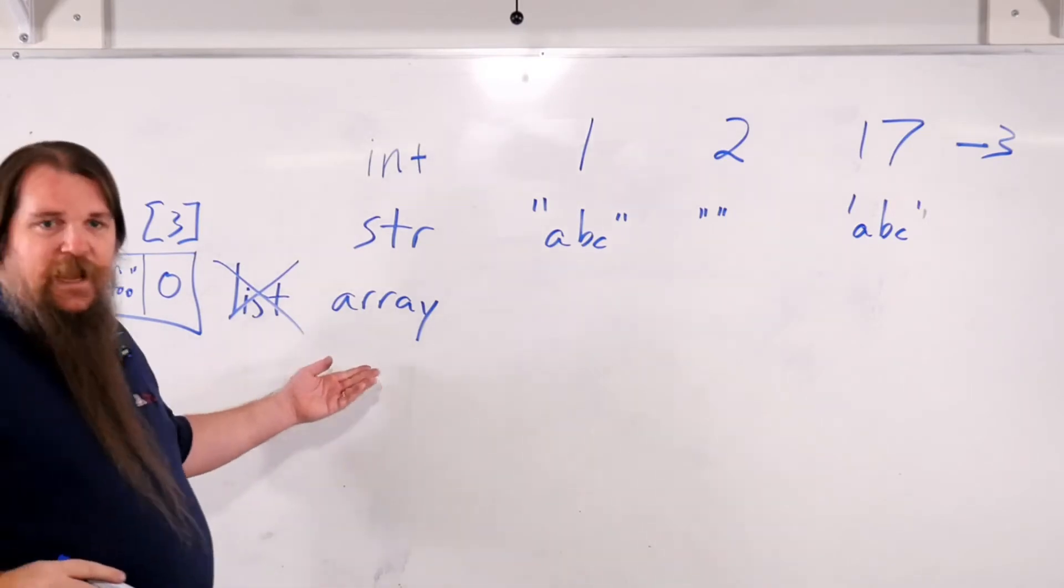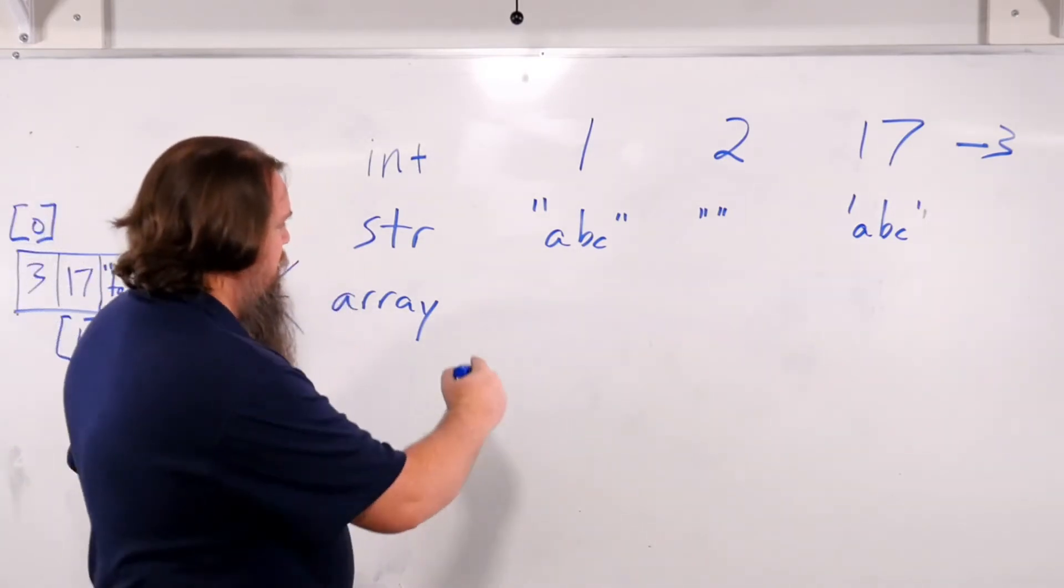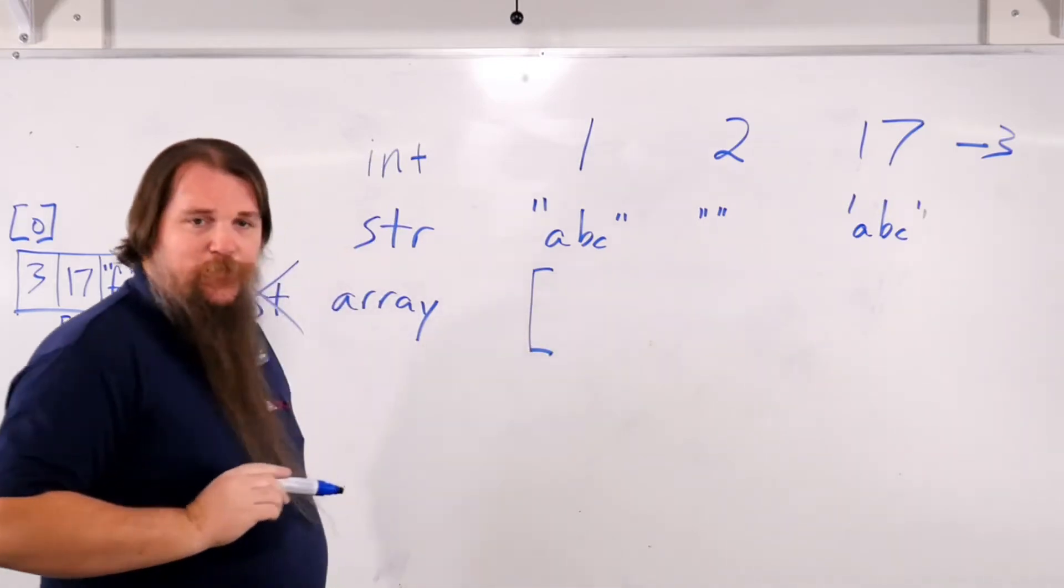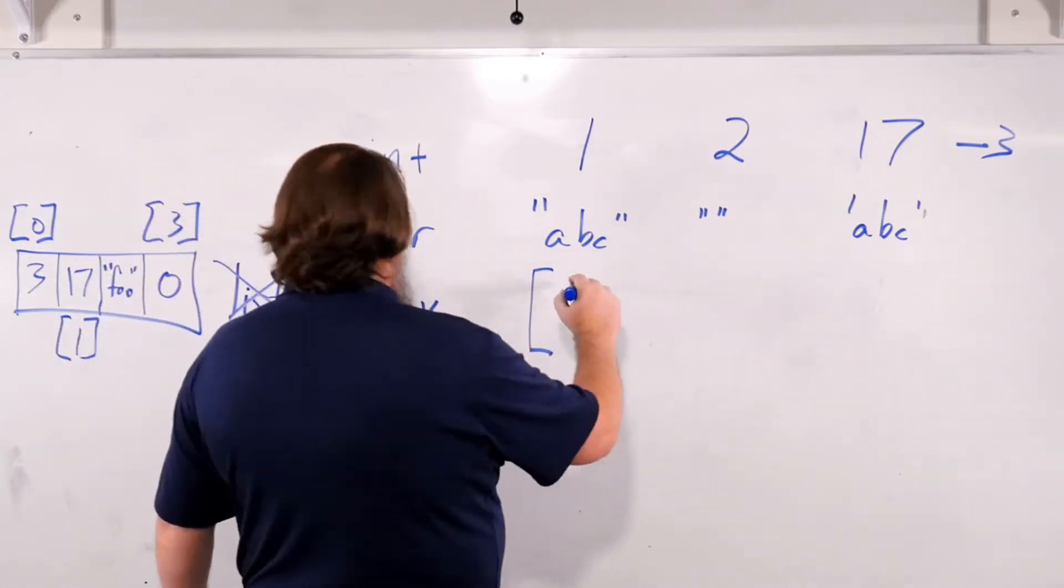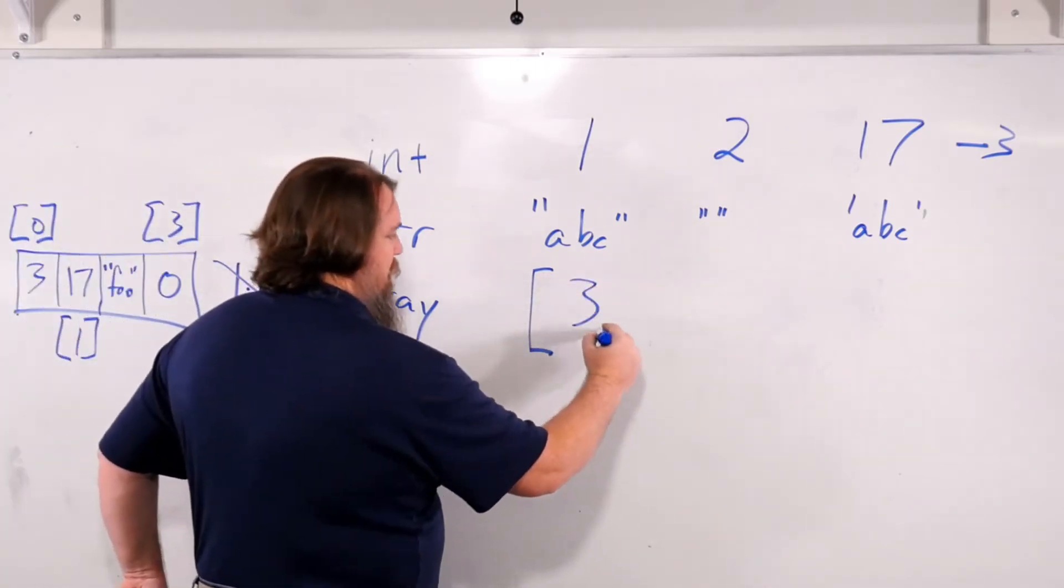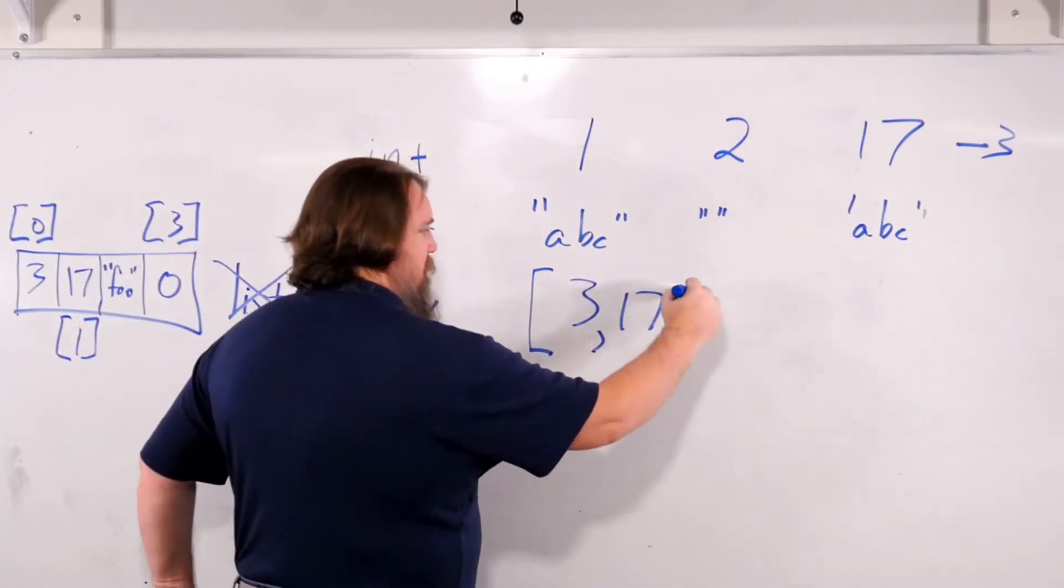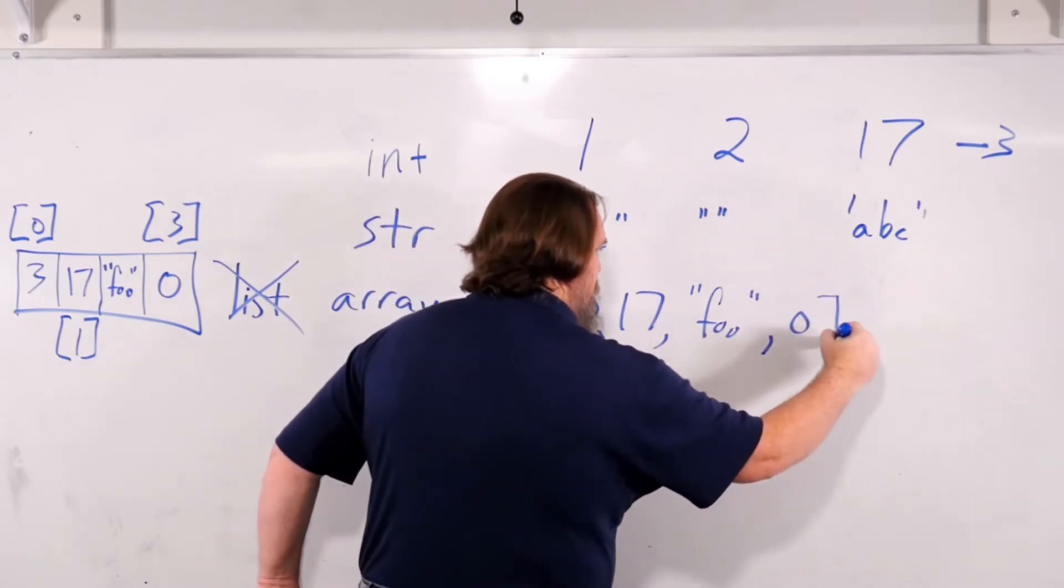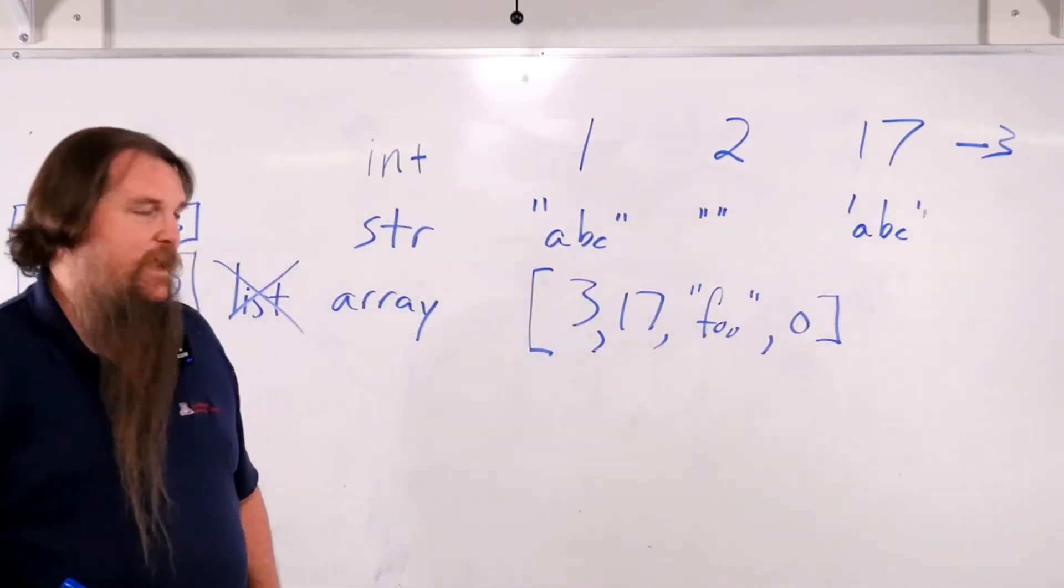How do you declare an array? Well, you can declare an array in Python by literally writing an open bracket and then writing a sequence of values separated by commas. So this is 3, 17, string foo, and then 0. 3, 17, string foo, 0. There you have it.